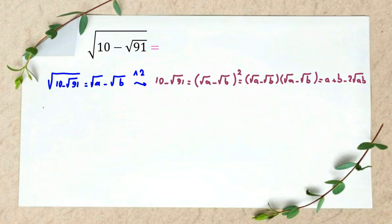Now in next step, well the 10 minus square root of 91. Where a plus b will be, equal to, write a plus b equals 10. Another equals, I write here. OK.